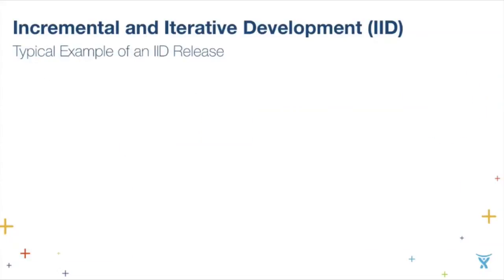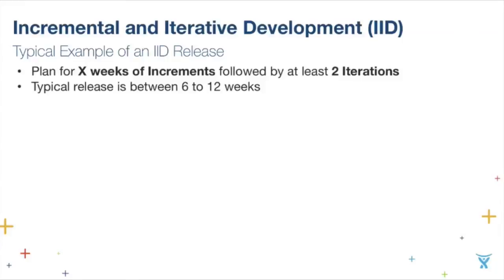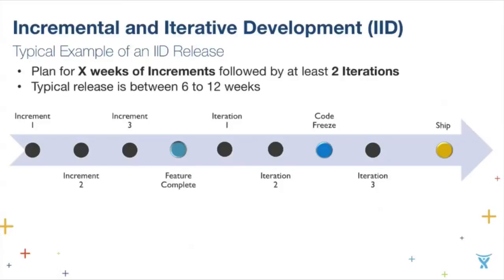Let me give you my definition of IID. A typical release will start with X weeks of increments, followed by at least two iterations — typically a six to twelve week process. Increments are the brand new code you're promising to deliver in a release — the new features you're going to develop. Iterations are where you iterate on features you may not have understood the right requirement for — refactoring that requirement. A typical release starts with three increments, then a phase gate called feature complete, followed by iterations refactoring misunderstood requirements, then a code freeze, a final regression iteration, and you ship that last golden build.